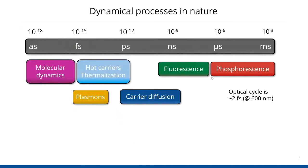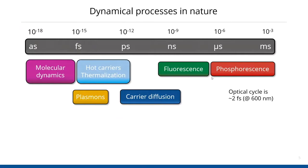In nature, and in particular in solid-state materials, there are a lot of different processes that span different timescales — a huge range of magnitudes in which dynamics occurs. On the fast timescales in the attosecond and femtosecond regime, you really have molecular dynamics, molecular switching, hot carrier emission and thermalization, and plasma dephasing. In the intermediate time ranges you become more sensitive to diffusion of carriers, electrons and holes through materials. As you move towards slower timescales, you can also see fluorescence and phosphorescence. For reference, a single optical cycle at 600 nm wavelength is 2 femtoseconds.